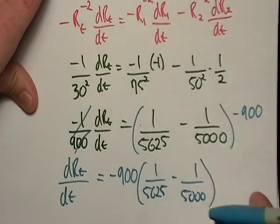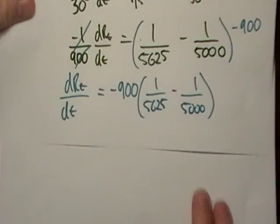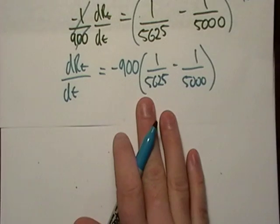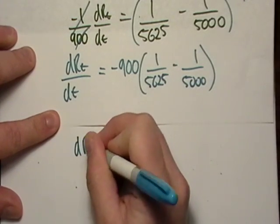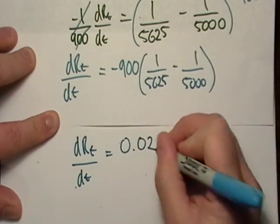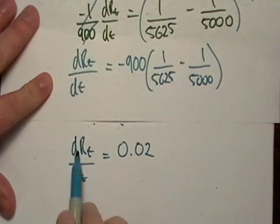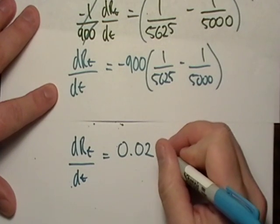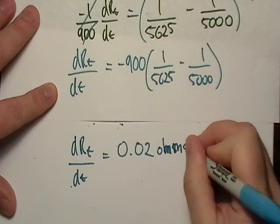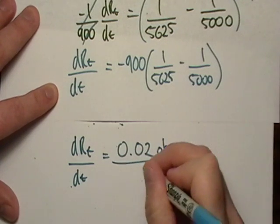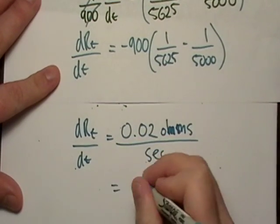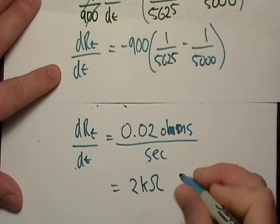Okay, and it looks like the answer equals 0.02. That's the derivative of resistance. So, it's going to be in ohms. Ohms per second. And that's a tenth, a thousandth. So, you could say that this is equal to two kilo-ohms.